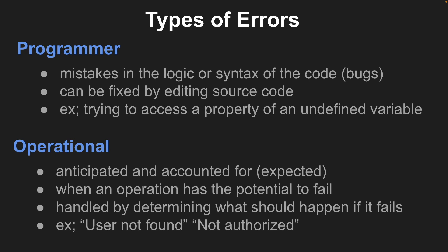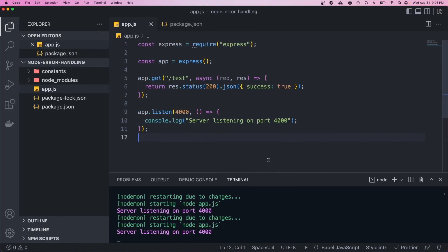The next type is operational errors, and these are errors that are anticipated and accounted for — they're expected. This happens when an operation has the potential to fail and we handle those errors by determining what should happen if it fails. You're thinking ahead, knowing something could go wrong, and deciding how to handle it. Some examples could be when a user is not found or they're not authorized, and these errors are usually sent back to the client.